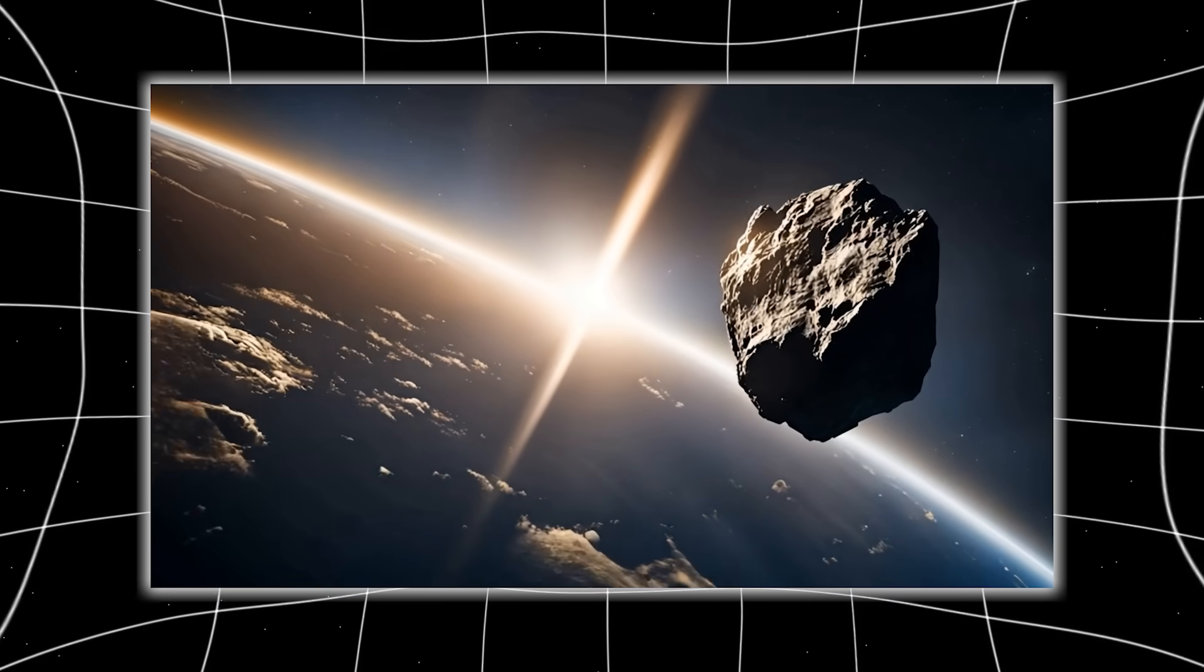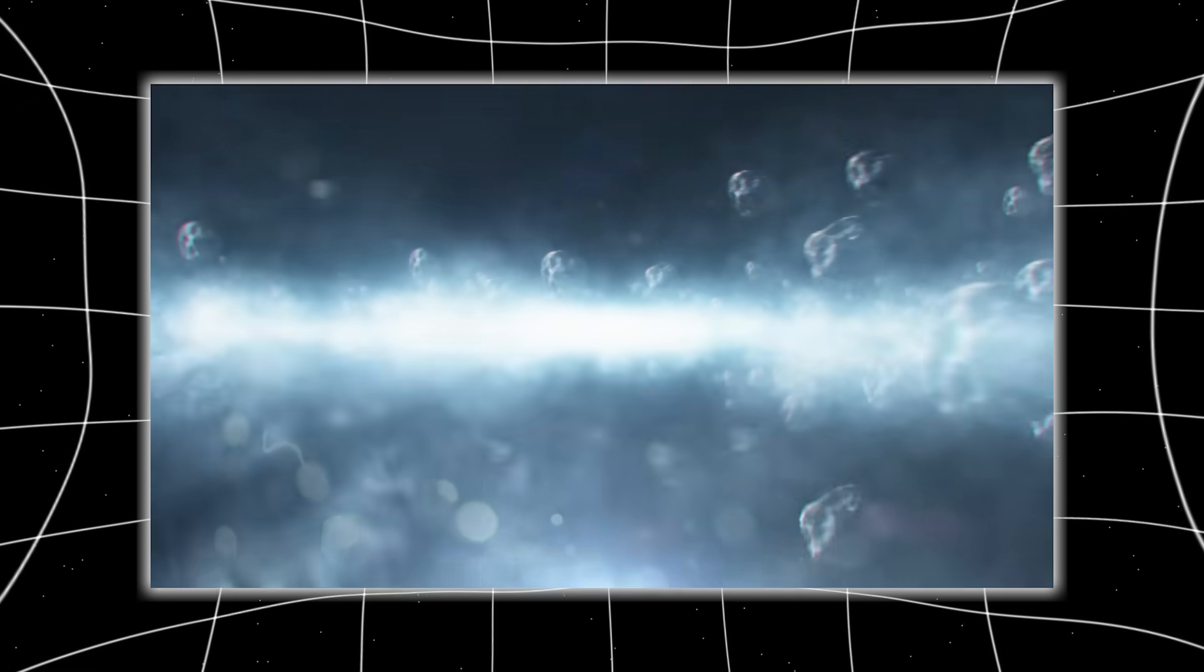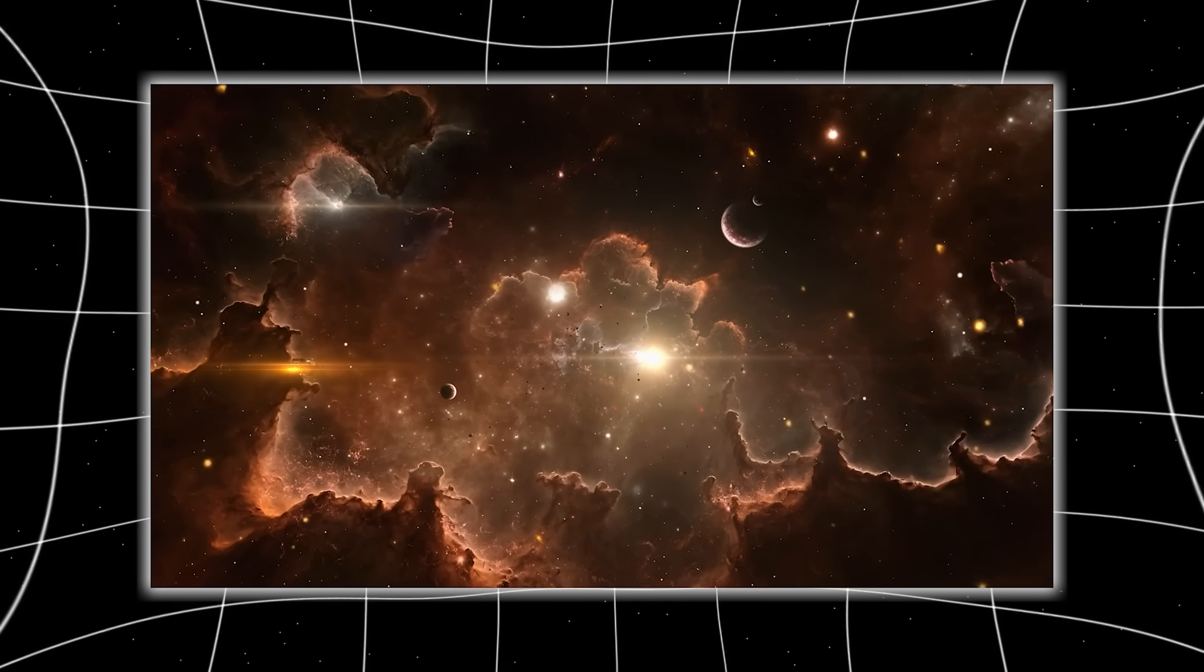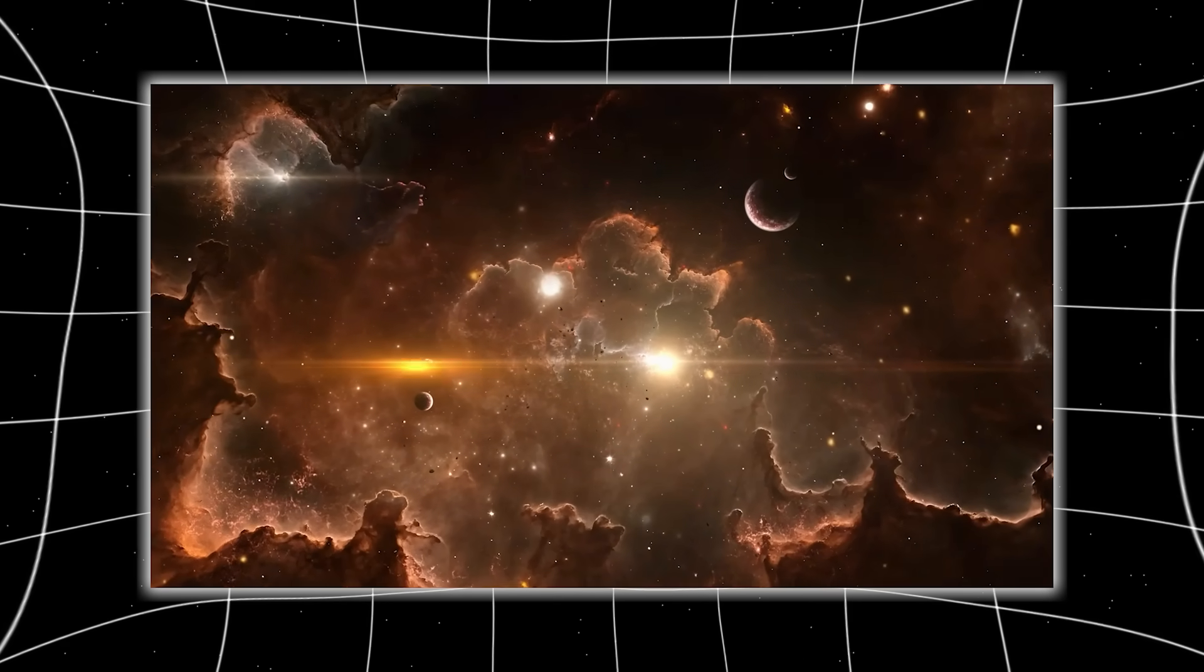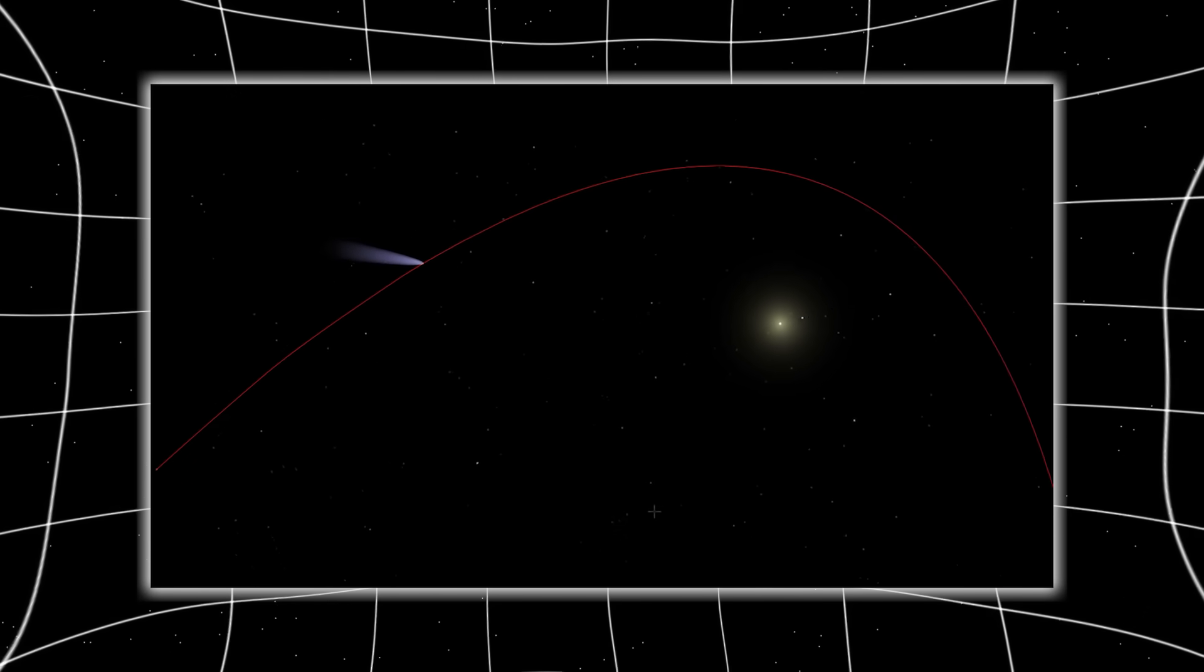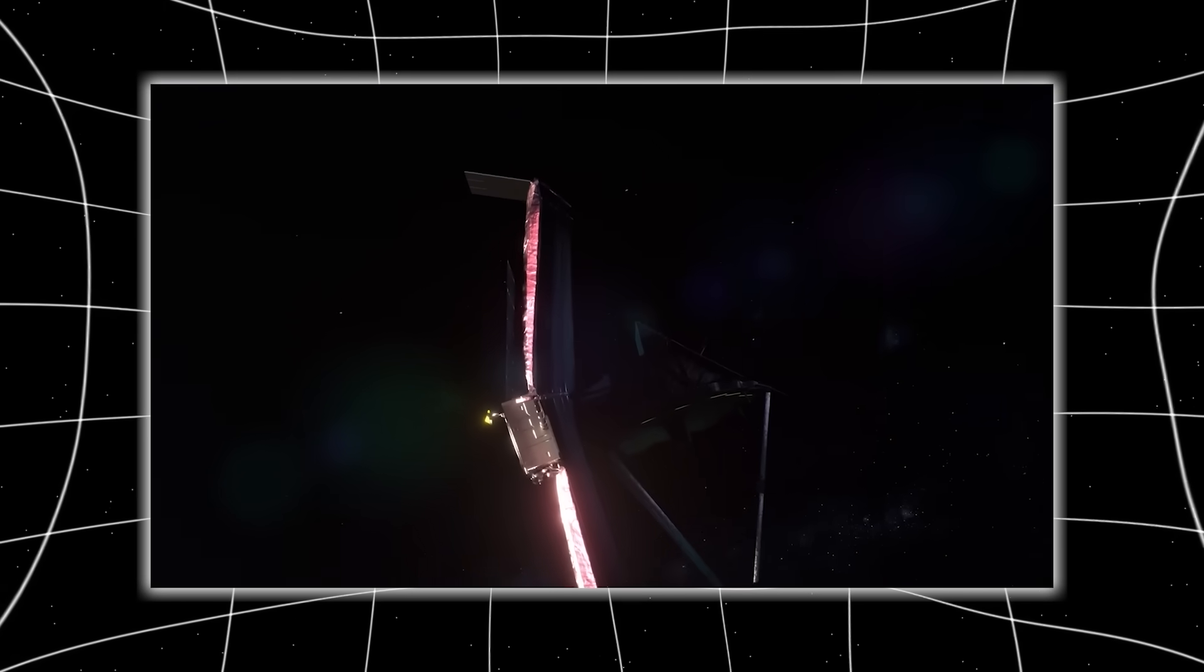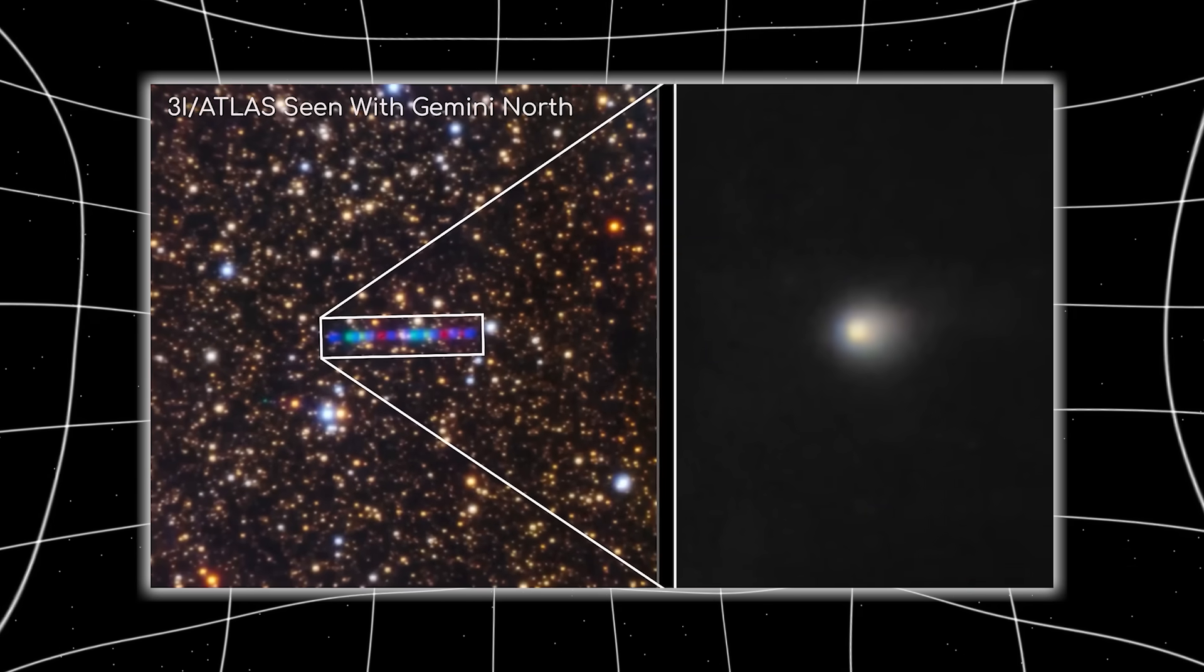Because as 3I Atlas came closer, its behavior defied every law of physics. Its rotation was too precise. Its light, too uniform. Its composition, too organized to be random. It adjusted its trajectory, gently, purposefully, whenever Earth had a clear view of it, as if ensuring we wouldn't miss it.